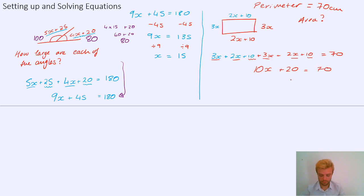We then solve the equation by taking 20 away from both sides to begin with, leaving us with 10x equals 50. And finally, by dividing by 10 to get x equals 5. Now we know what x is, we can go back to the original question and answer this. We can find what the area is because we know x is 5 now. So 3 lots of x, 3x is 15. 2x is 10, so 2x plus 10 is 20. And if the width is 20 and the height is 15, then the area is 20 times 15, which is 300 centimeters squared.